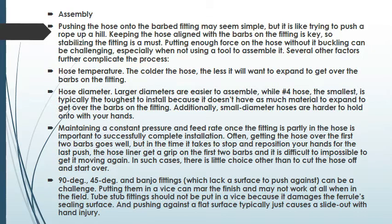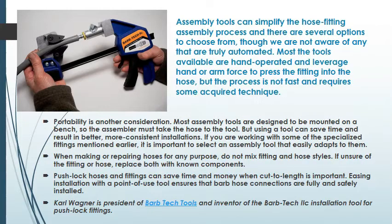90-degree, 45-degree, and banjo fittings, which lack a surface to push against, can be a challenge. Putting them in a vise can mar the finish and may not work at all when in the field. Tube stop fittings shouldn't be put in a vise because it damages the ferrule's sealing surface, and pushing against the flat surface typically just causes it to slide out with hand injury. Assembly tools can simplify the hose fitting assembly process and there are several options to choose from, though most are hand operated and leverage hand or arm force to press the fitting into the hose, but the process is not fast and requires some acquired technique.